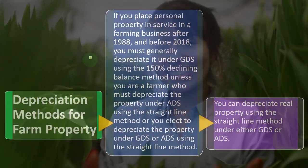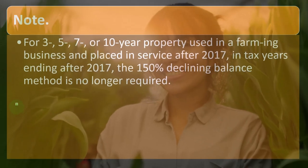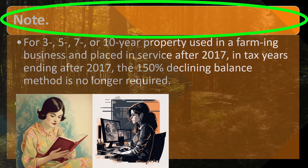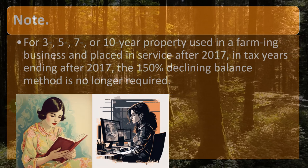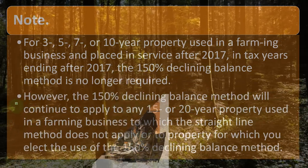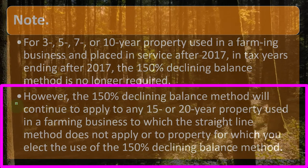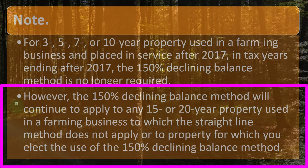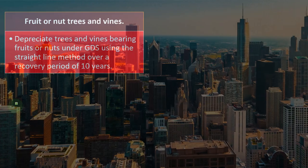You can depreciate real property using the straight-line method under either GDS or ADS. Note that for 3, 5, 7, or 10-year property used in a farming business and placed in service after 2017, the 150% declining balance method is no longer required. However, the 150% declining balance method continues to apply to any 15 or 20-year property used in a farming business to which the straight-line method does not apply, or property for which you elect the 150% declining balance method.